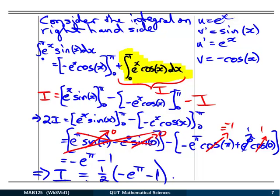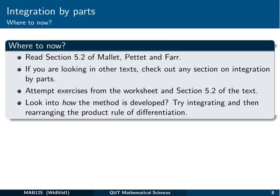So that's probably one of the more complicated ones you'll get in integration by parts. But really, it's just a matter of remembering that you're just doing it twice, and you've just got to keep track of things as you go through. The application of the method, it's pretty much the same. Okay, so where to now? Basically, you can check out in the text section 5.2, and other text you can check out any section on integration by parts. You can have a look at some of the exercises from the worksheet, and also from the text, and maybe look into how the method is developed. Why does that have anything to do with the product rule of differentiation? So check that out and have a think about it. You can try integrating and rearranging the product rule, and you should be able to get back to this rule for integration. Anyway, that's it for this section.